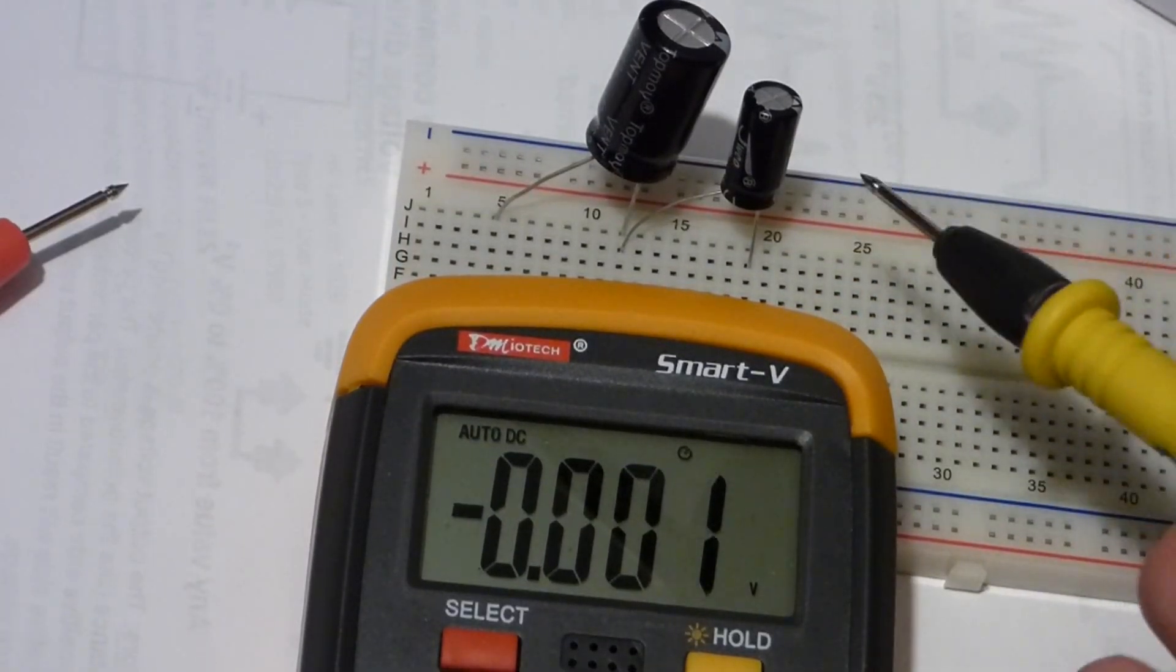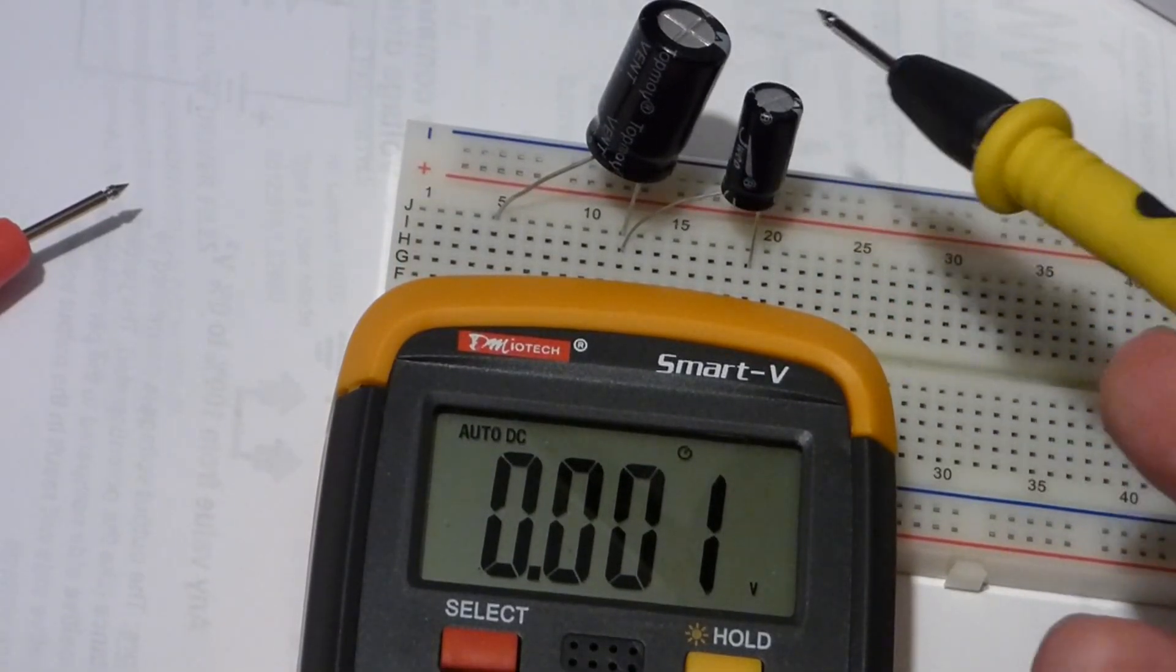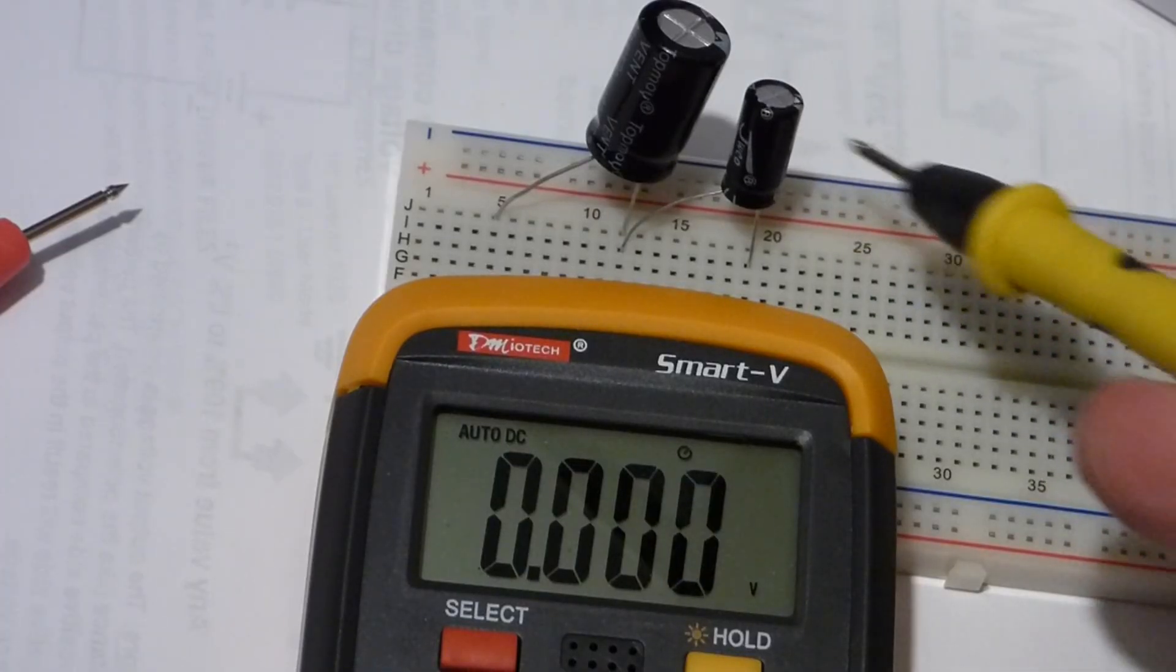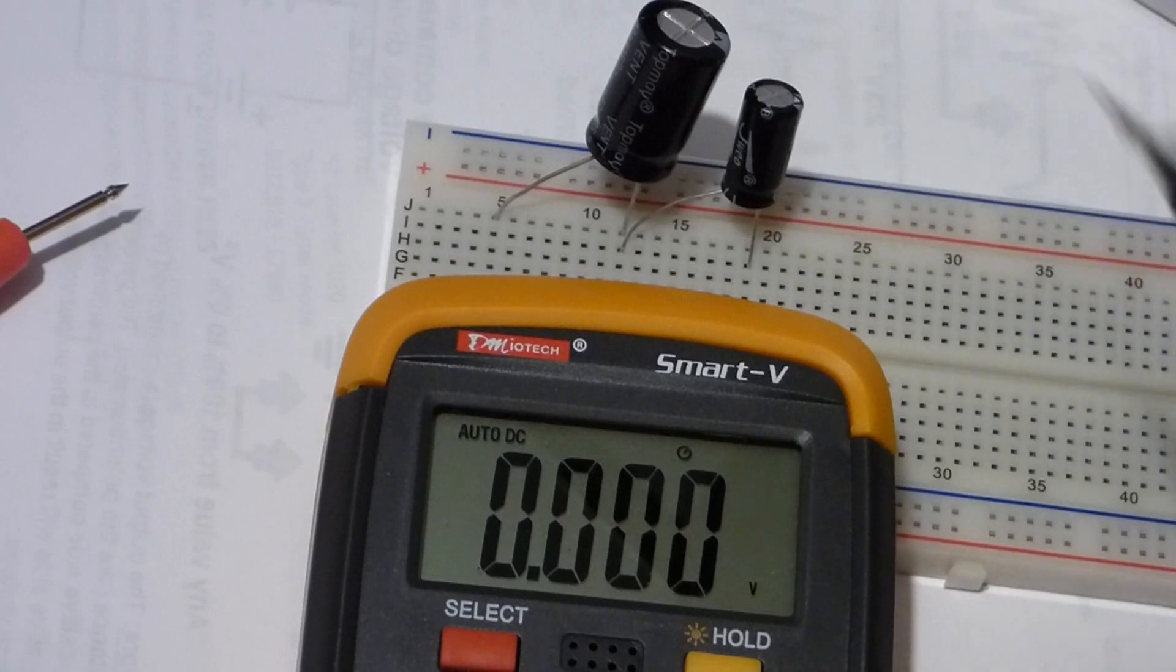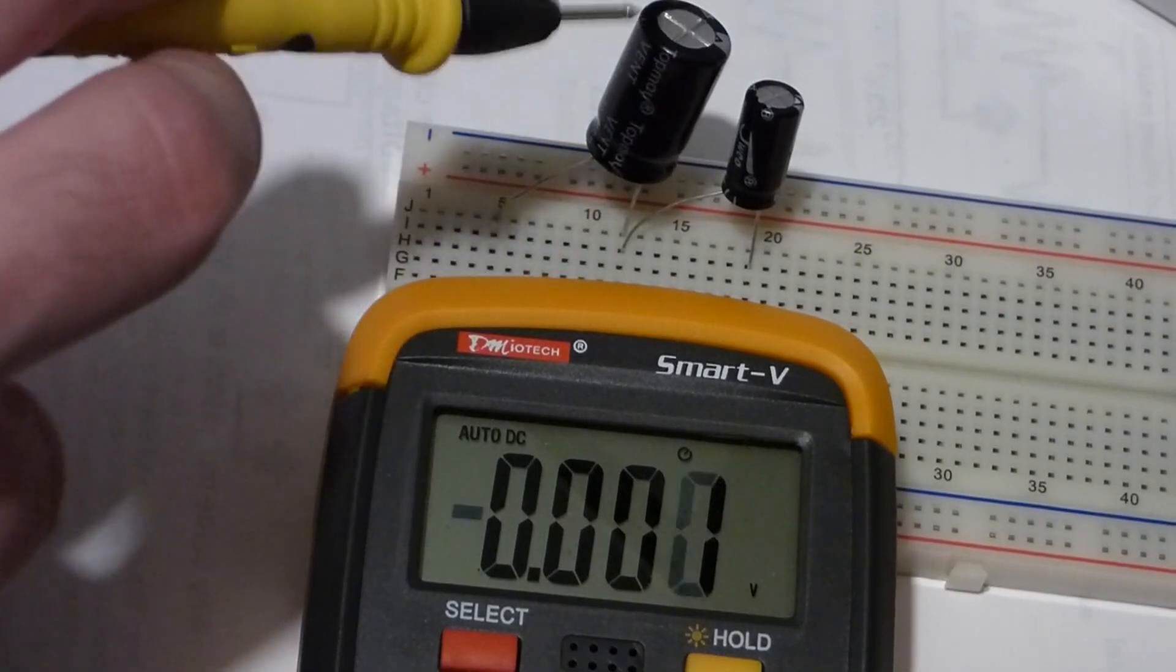And so the smaller capacitors gain more voltage when you charge them in series than larger capacitors. That's one of the reasons why they don't charge evenly, which can be a problem.